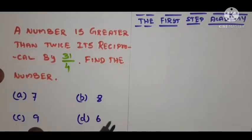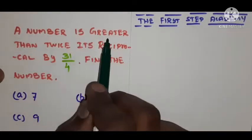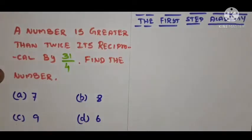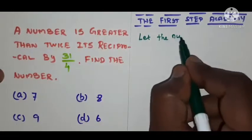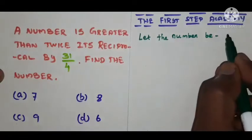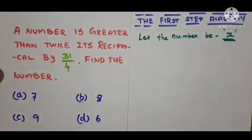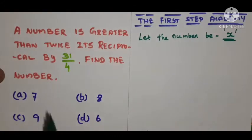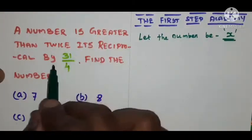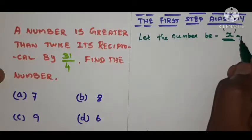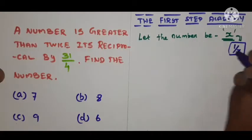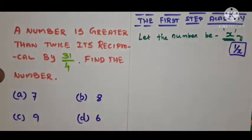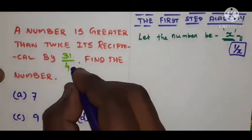In this kind of question, understanding the question is very important — each and every word matters. Look here: a number is greater than twice its reciprocal. Let the number be x. Now we need to find the reciprocal of x. The reciprocal of x is 1/x. They said twice its reciprocal by 31/4.